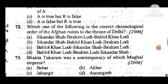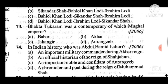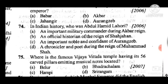Question 74: In Indian history, who was Abdul Hamid Lahori? Answer is B — an official historian of the reign of Shah Jahan. Question 75: Where is the famous Vittala Temple having 56 carved pillars emitting musical notes located? Answer is C, Hampi.